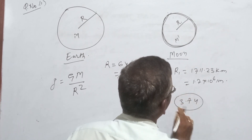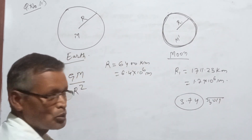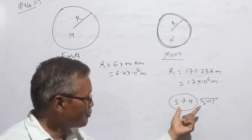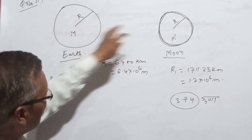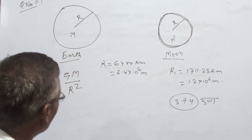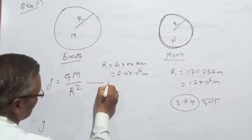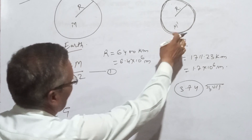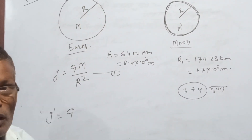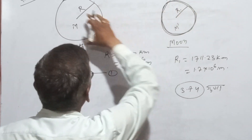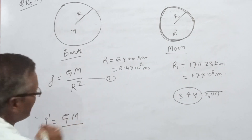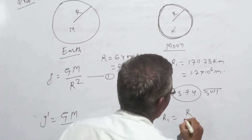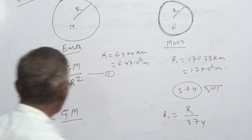Here we are looking at the Moon. The Moon's surface gravity is 3.74 m/s². This is the S_co mass (M) and this is the S_co radius (R). The R value equals 3.74 — this is the surface radius.